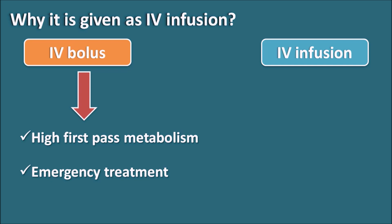Selective beta-1 blockers do not have significant first-pass metabolism, so they can be given by the oral route. Whenever they are required for emergency treatment, they can be given by IV bolus administration. But in the case of esmolol, it is given by IV infusion. Drugs are given by IV infusion when they are short-acting.